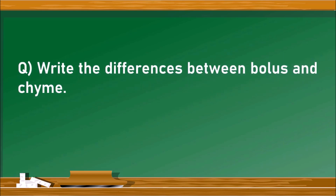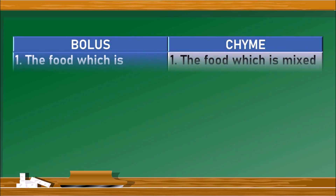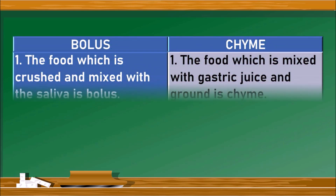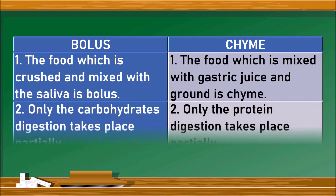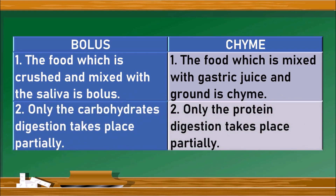The first question: write the differences between bolus and chyme. Let us draw a table with bolus and chyme on either side. Bolus is the food which is crushed and mixed with saliva in the mouth, whereas chyme is the food which is mixed with gastric juice and ground in the stomach.